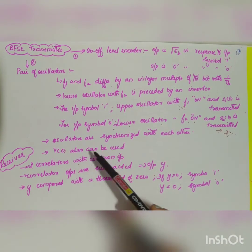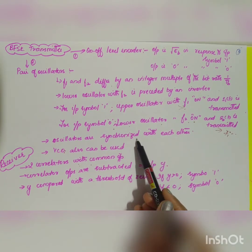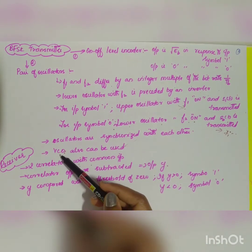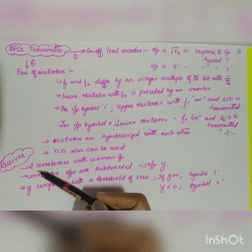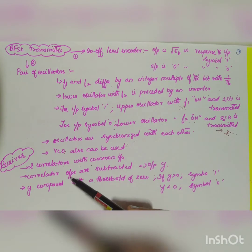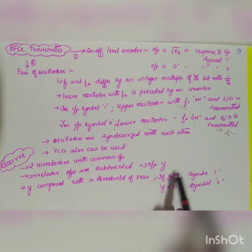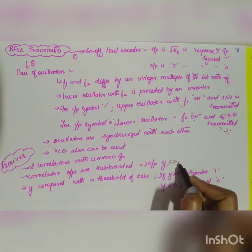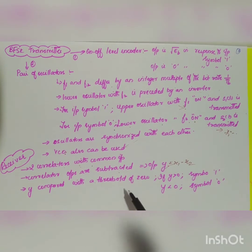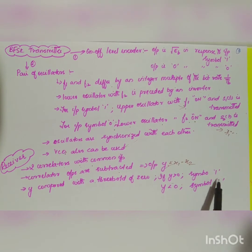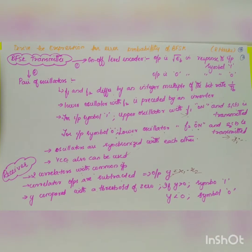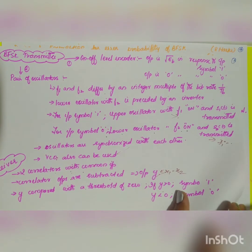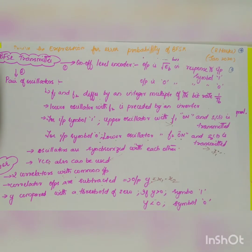In the receiver, two correlators share a common input. Their outputs are subtracted to give y = x_1 − x_2. This value y is compared with a threshold of zero: if y > 0, symbol 1 is transmitted; if y < 0, symbol 0 is transmitted.